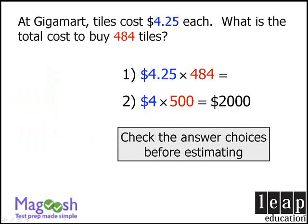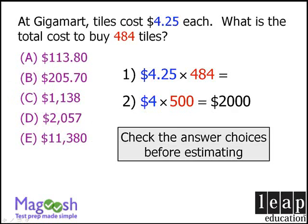Conversely, what if our answer choices look like this — all very spread apart? In this case, we can estimate. When we estimate, we see that our total cost is $2,000, and only one answer choice is even remotely close to $2,000. So this must be the right answer.